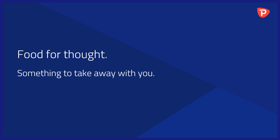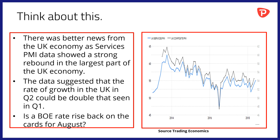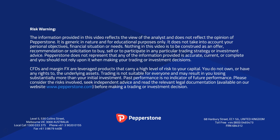Food for thought — something to take away into the trading day and beyond. There was better news from the UK economy yesterday as services sector PMI data showed a strong rebound in the largest part of the UK economy. The data suggested that the rate of growth in the UK in Q2 could be double that seen in Q1. The question is: is a Bank of England rate rise back on the cards for August? The chart here is a plot of the services PMI data overlaid with the composite PMI data, and as you can see both of these key indicators have started to head higher in the latter part of 2018 — which is promising, and may allow the Bank of England to raise rates in August if that data and momentum is to be continued.